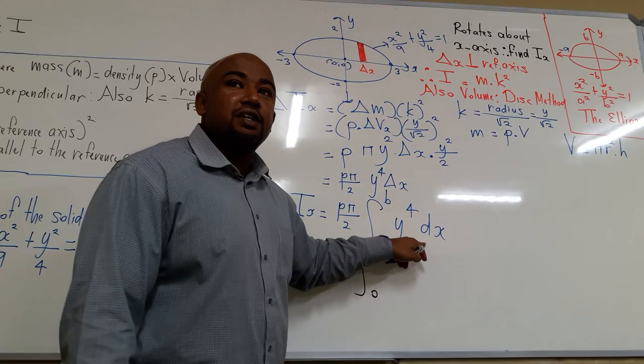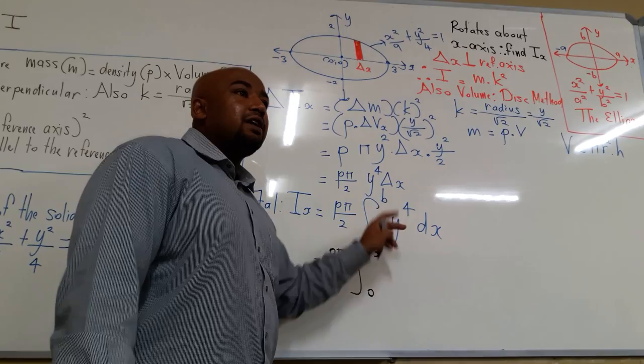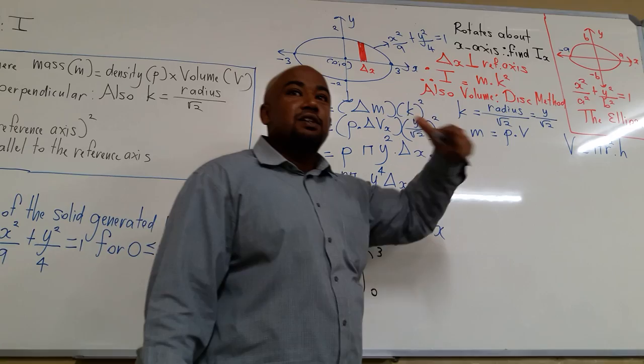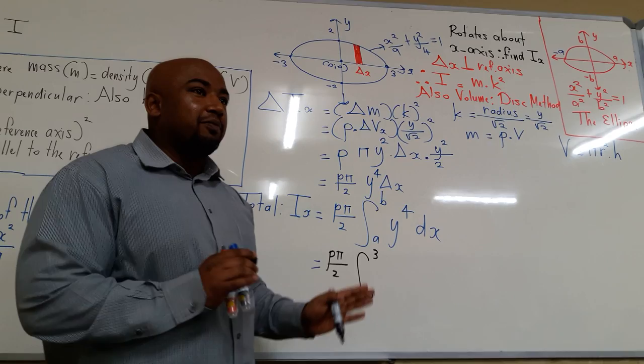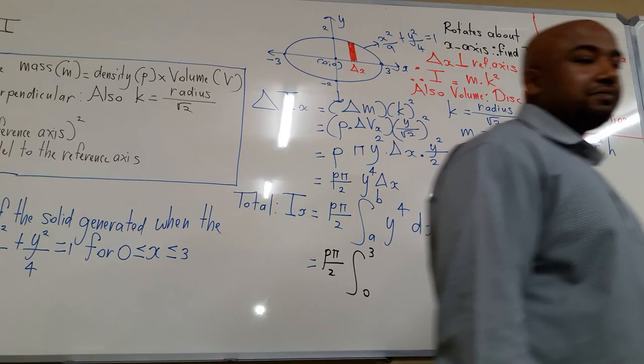Since this is y to the power 4 and we are integrating with respect to x, we need to get y in terms of x. Go back to the original equation, manipulate it, substitute, and integrate. Let's see if you remember your N3 work — manipulate the formula to get y to the power 4.